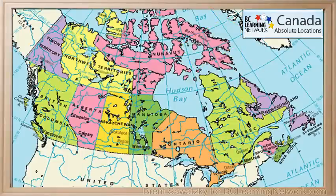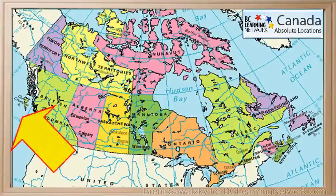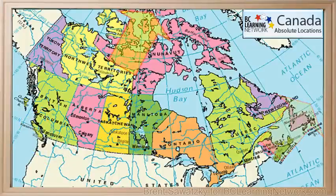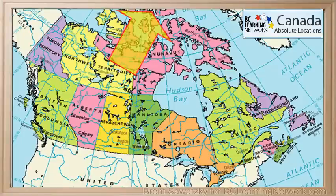Another way of defining Canada's relative location: we can say that it's between the Pacific Ocean on the west and the Atlantic Ocean on the east, and also south of the Arctic Ocean which is up here. So there's lots of ocean around us. In fact, Canada has the longest coastline of any country in the world.